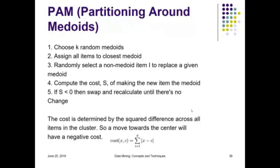In the third step we select another non-medoid item, a data element which was not selected earlier as a medoid, and replace one medoid with that. Then we do the same computation again.